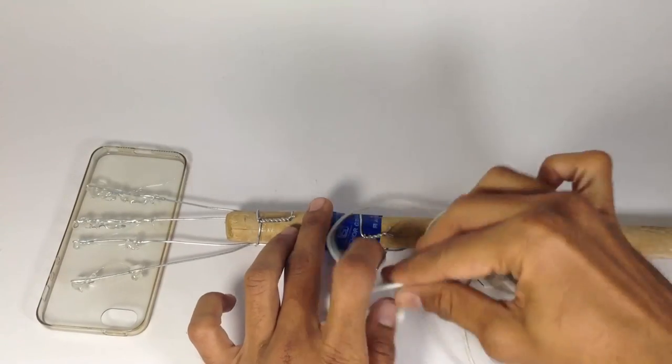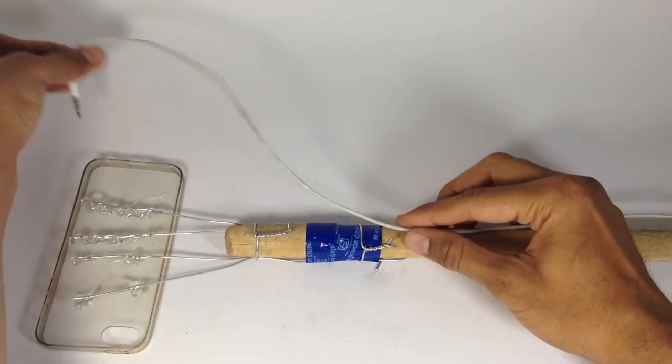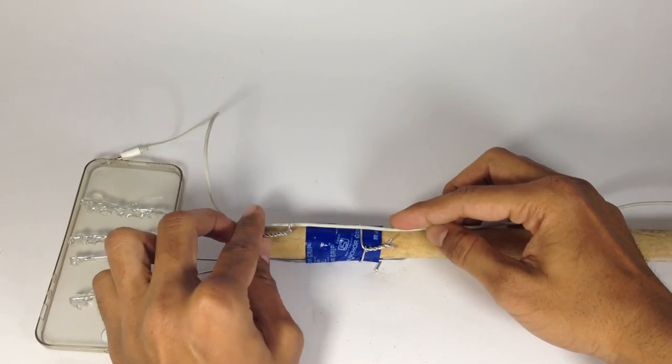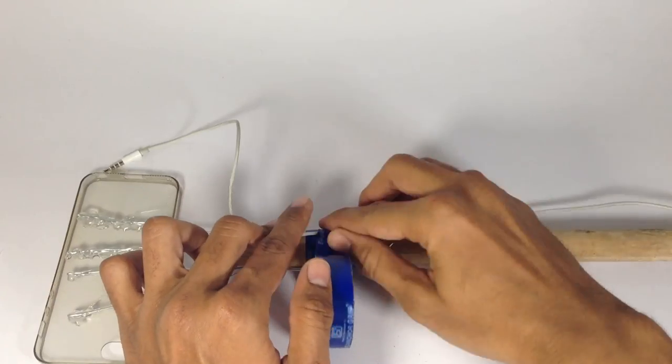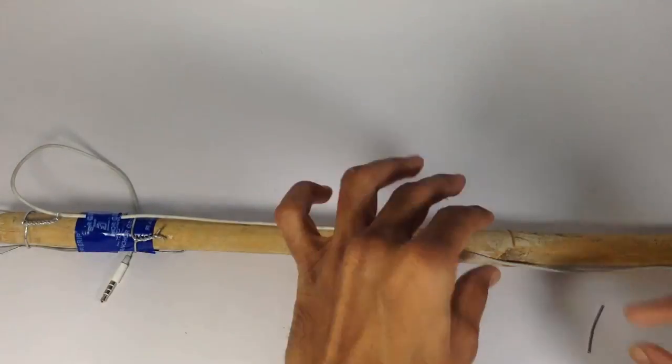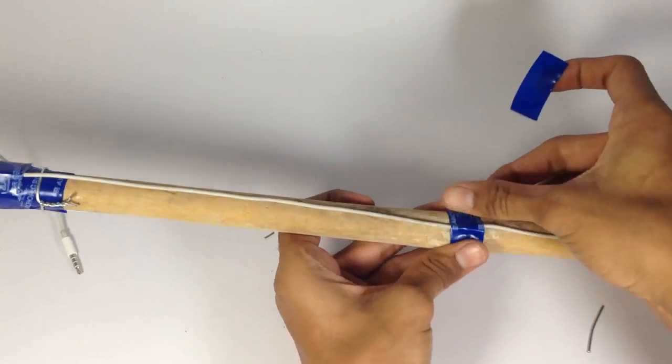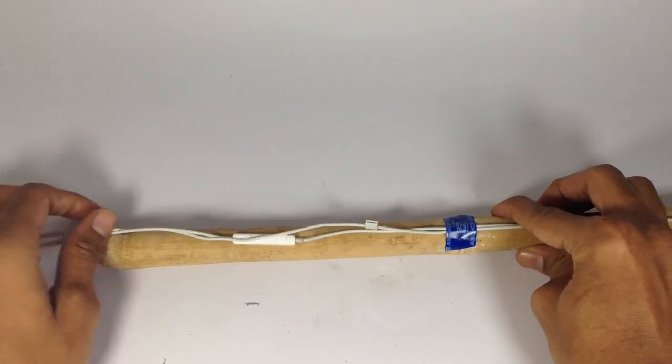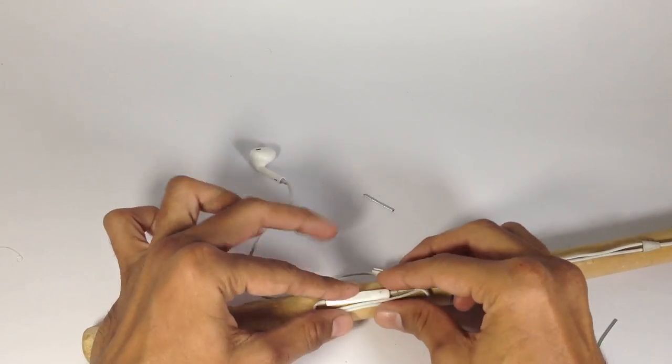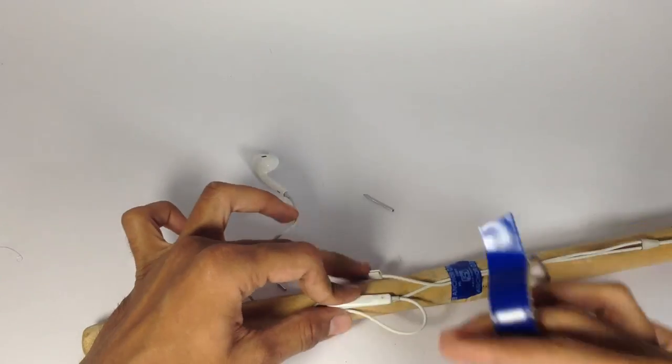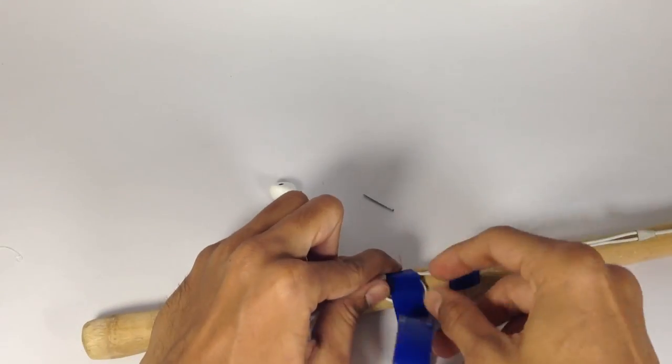Now take the earphone and fix it on the stick as shown in the video. The volume switch will be used to click photos, so it should be at a position where we can easily reach it.